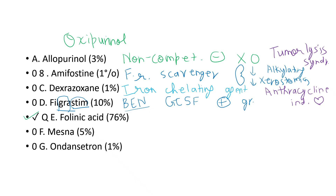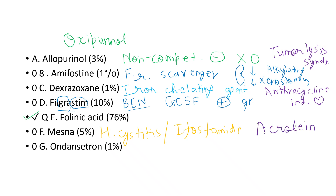Mesna prevents hemorrhagic cystitis due to cyclophosphamide or ifosfamide by binding to acrolein, the toxic metabolite produced by these agents — this is very commonly asked in USMLE and exam questions. Ondansetron is a serotonin 5-HT3 receptor inhibitor used in chemotherapy-induced nausea and vomiting.